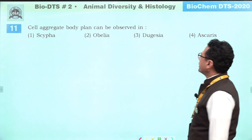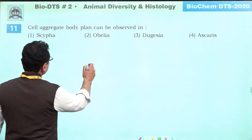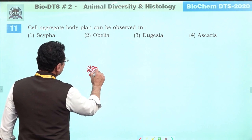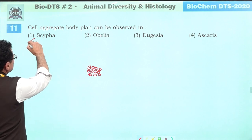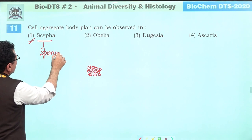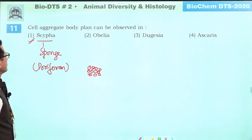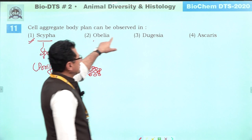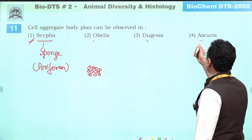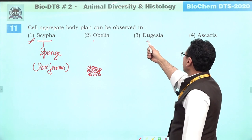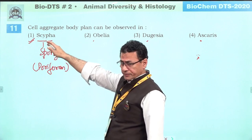Cell aggregate body plan is found only in sponges in the animal kingdom. The true example is Sypha — it is a sponge, a member of phylum Porifera. Sycon has cell aggregate body plan; the cnidarian has blind sac body plan; the Platyhelminth has blind sac body plan; Ascaris has a complete alimentary canal — tube within tube body plan. So the correct answer is Sypha (sponge).